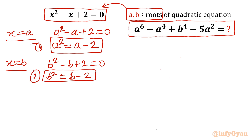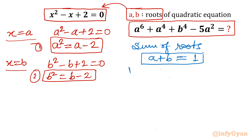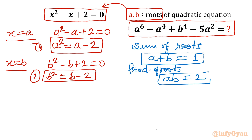Now I will use Vieta's method — sum of roots and product of roots. For the quadratic ax² plus bx plus c, the sum of roots is minus b over a, which gives a plus b equal to minus(−1) over 1, so a plus b equals 1. This is equation 3. The product of roots gives ab equal to 2. This is equation 4, and we will use these if required.